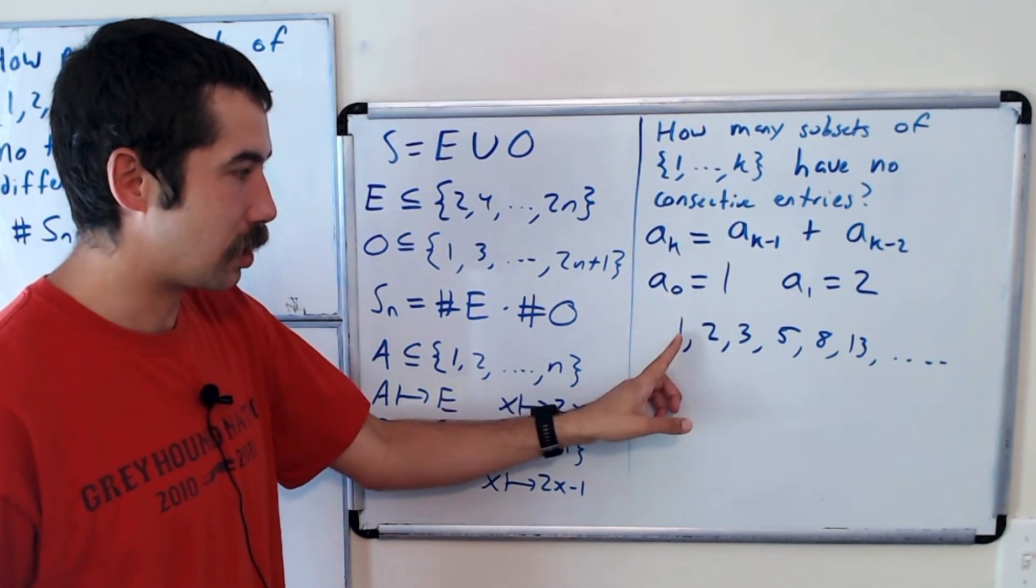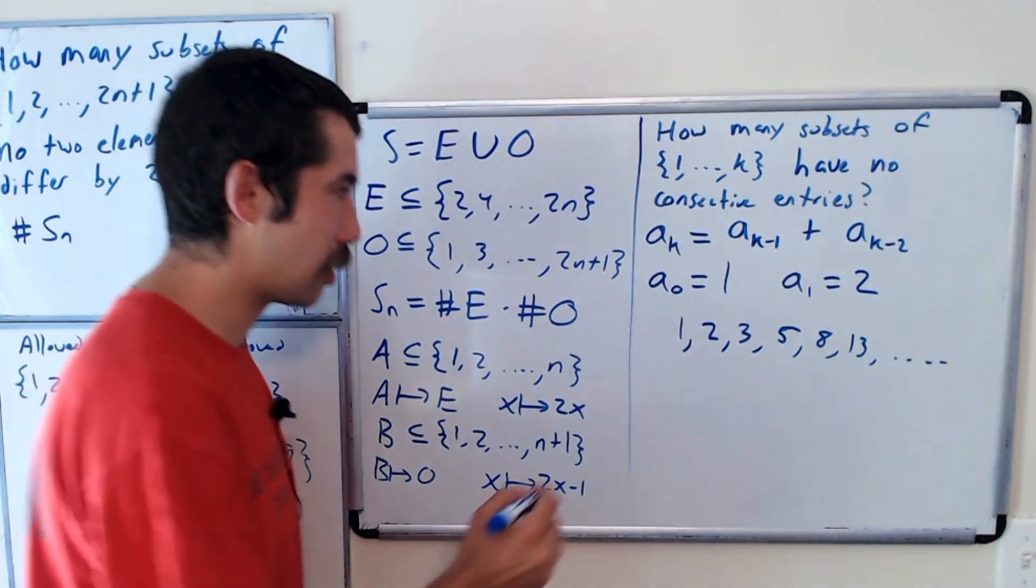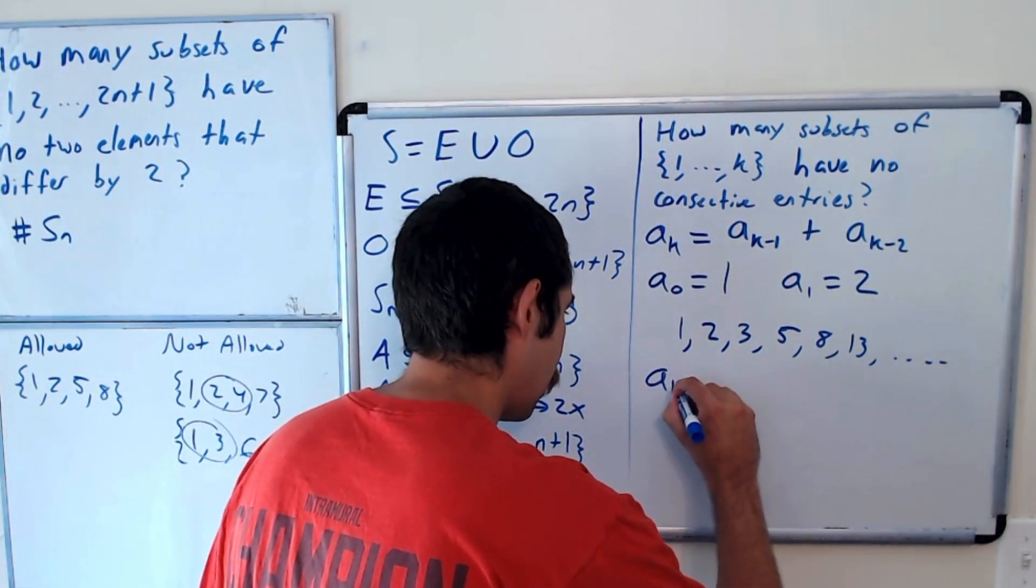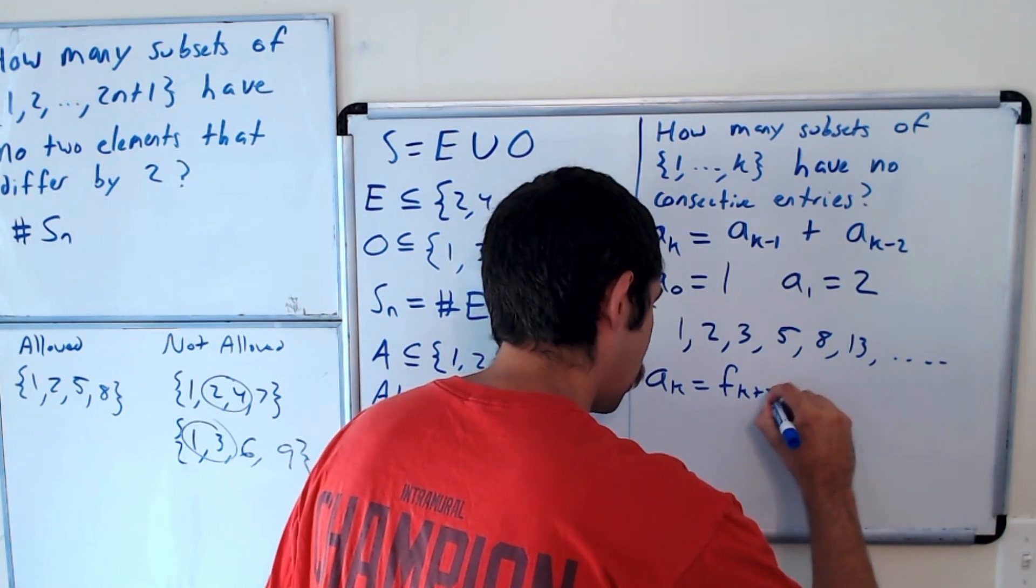It's clearly the Fibonacci numbers, but how do they match up? Well, the 0th goes to the second Fibonacci number. The first term would go to the third Fibonacci number. So A sub K is equal to F sub K plus 2.